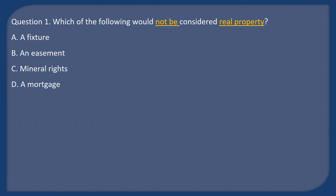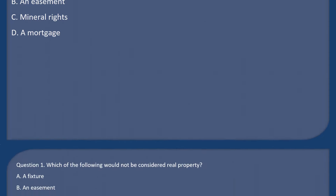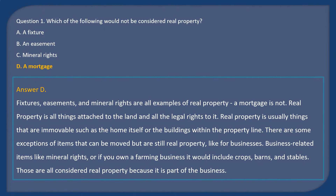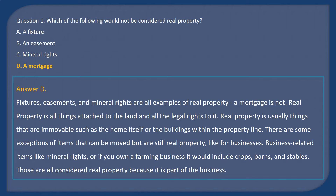Question 1: Which of the following would NOT be considered real property? A. A fixture. B. An easement. C. Mineral rights. D. A mortgage. Answer: D. Fixtures, easements, and mineral rights are all examples of real property. A mortgage is not. Real property is all things attached to the land and all the legal rights to it — usually things that are immovable, such as the home itself or the buildings within the property line.